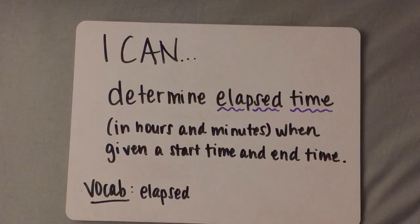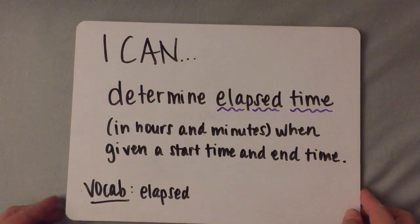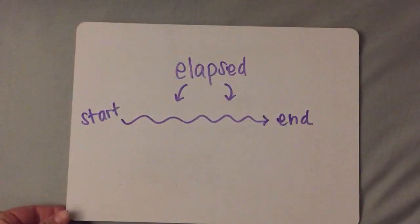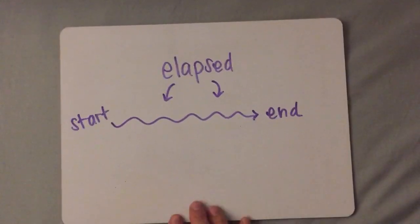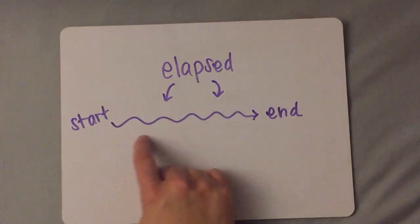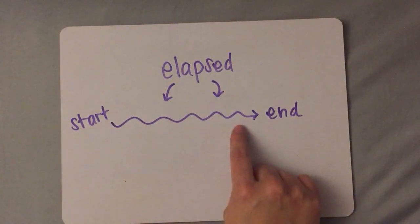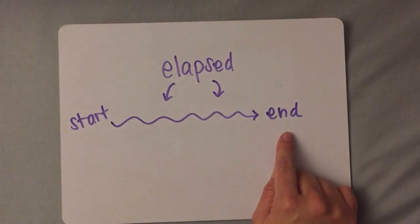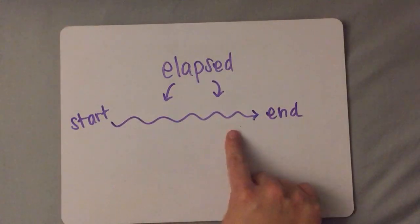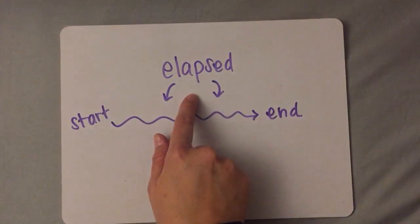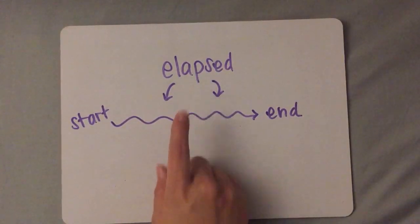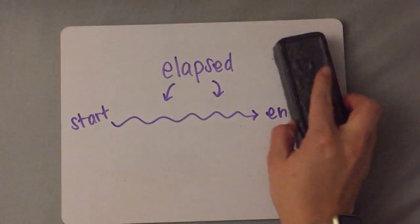The vocabulary you need to know is elapsed. So what is elapsed? When you start an activity and then you continue doing it and then you stop or when it ends, that time you were doing it is the elapsed time. The time you spend doing something is the time that has elapsed.